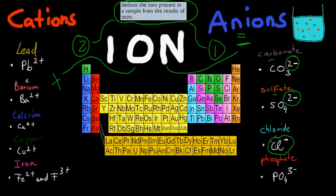Chloride, Cl-, again negative charge. Phosphate, PO4 3- — therefore these are all anions. And what you need to know is that if we have cations and anions coming together, they form a salt.